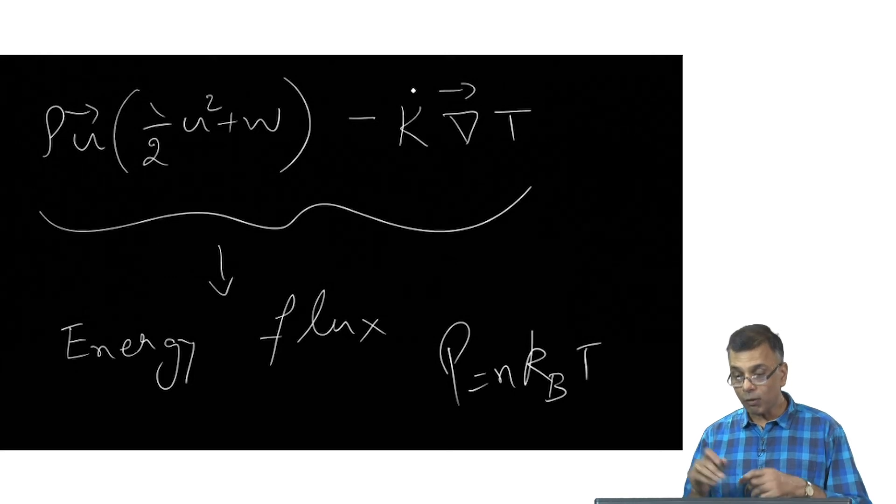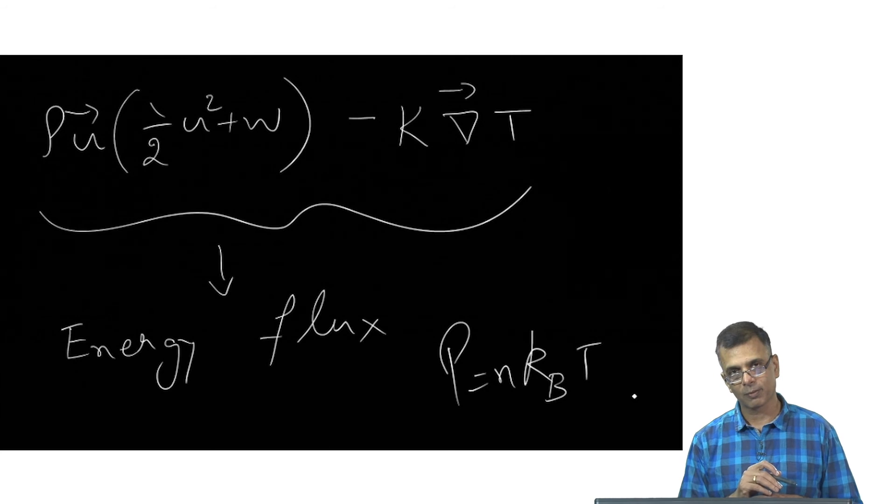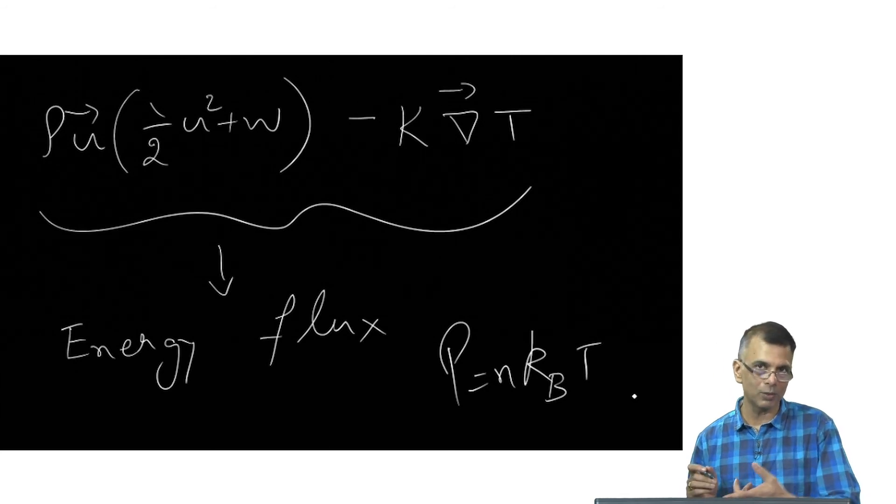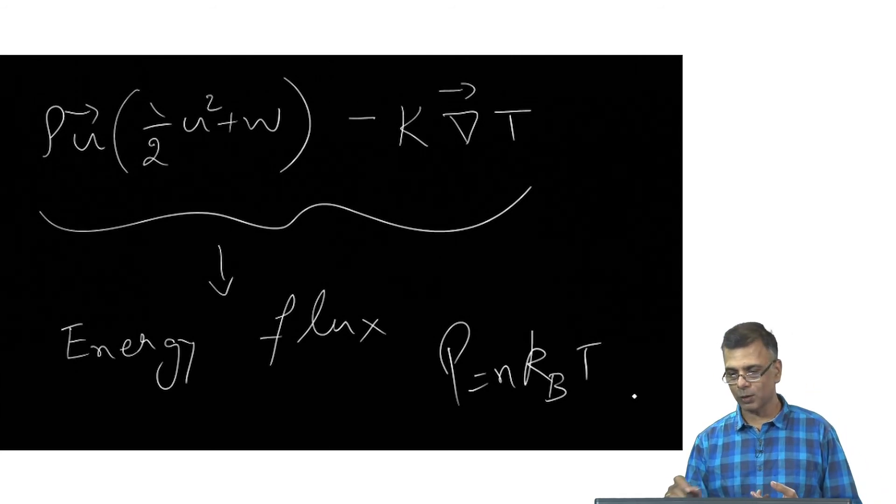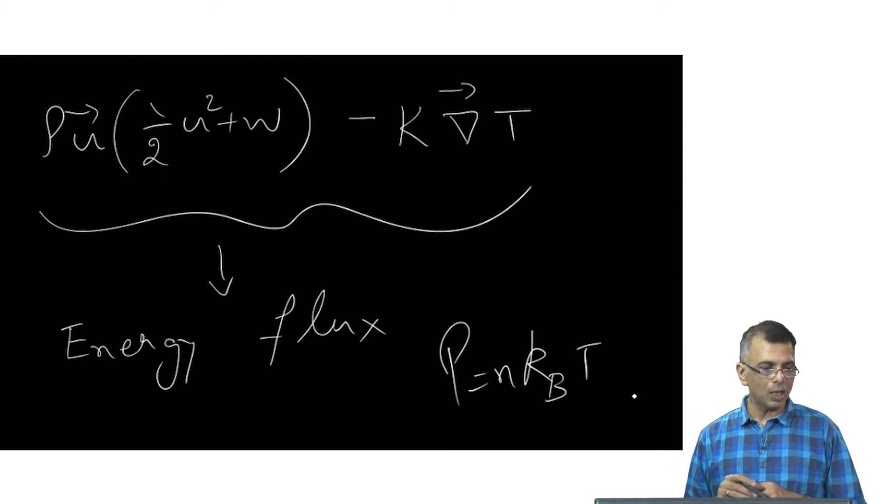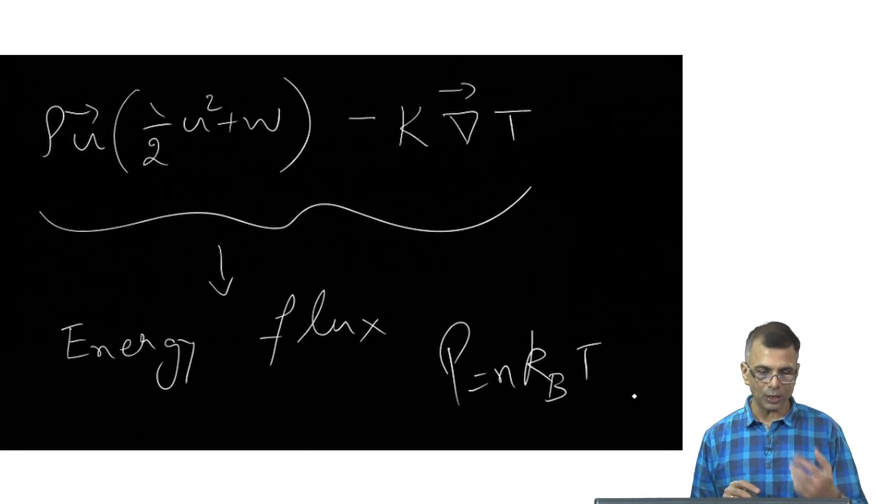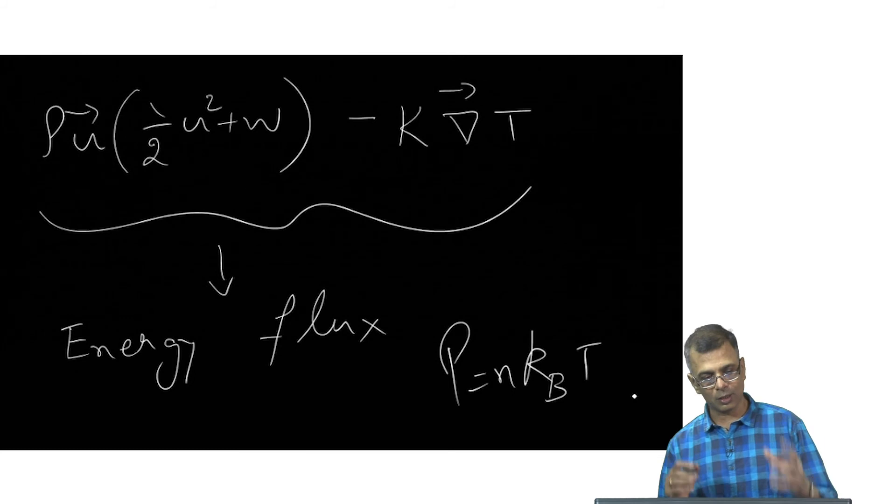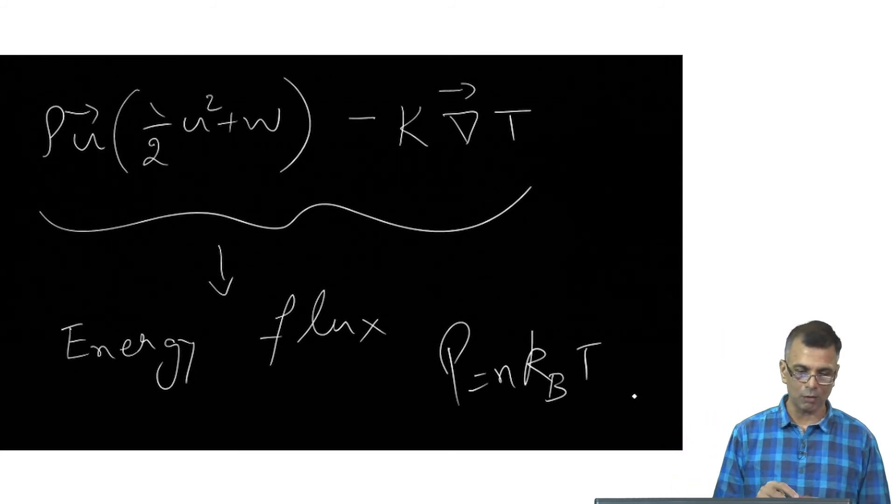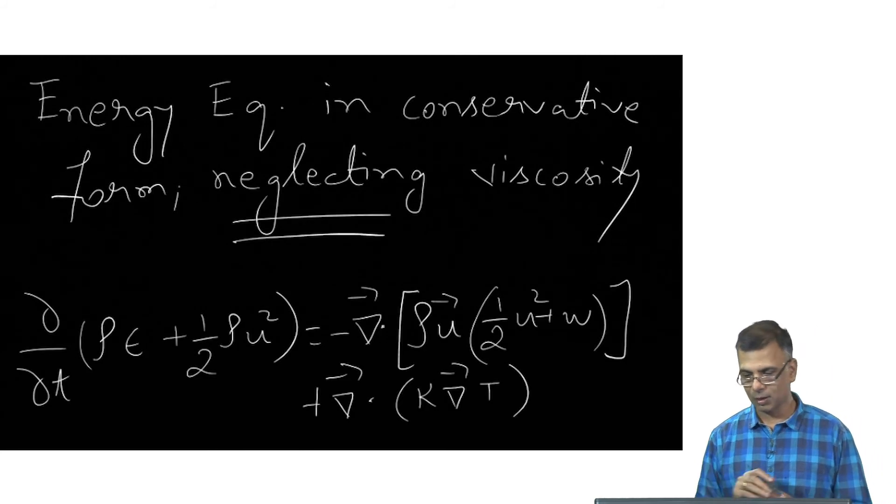And if you have this conduction term, then you need an equation of state like p equals n k T, because that's yet one more variable. You only have three equations, and there's one more variable. So you need to tie things together. So this is all I really wanted to say at this point. It's possible to write down an energy equation in a conservative form, in a form like this, and that is this.